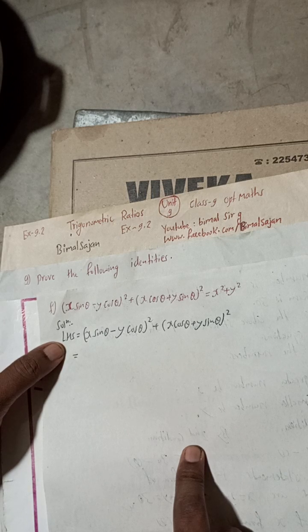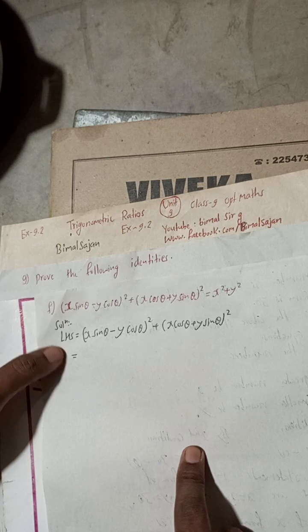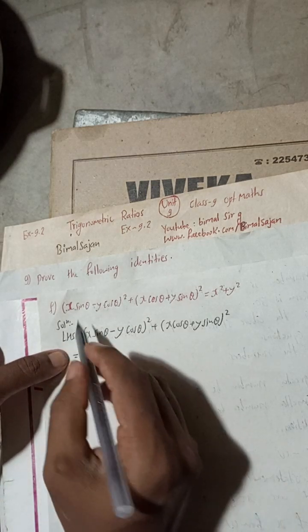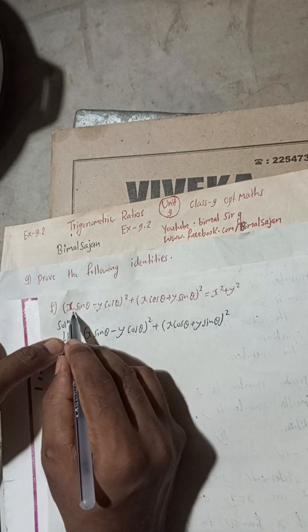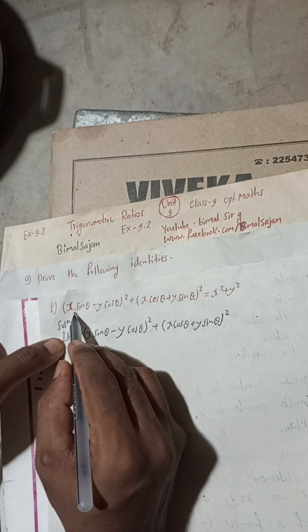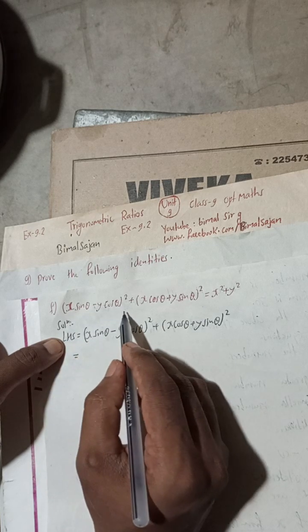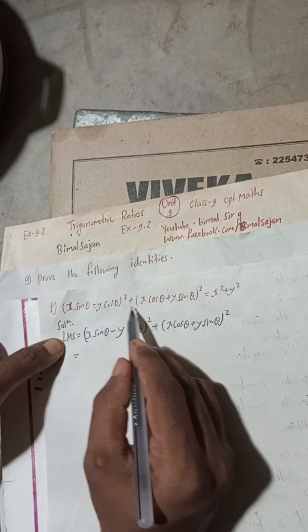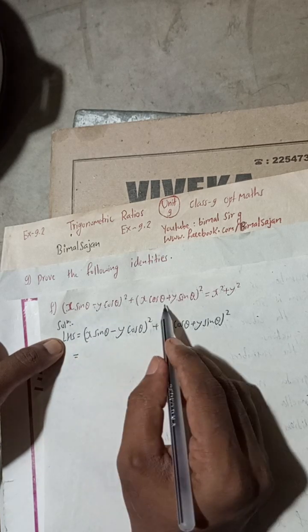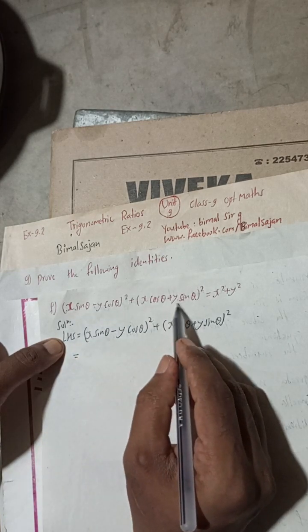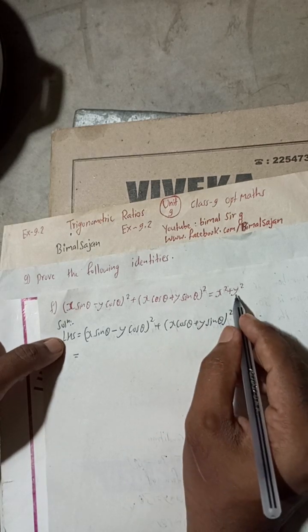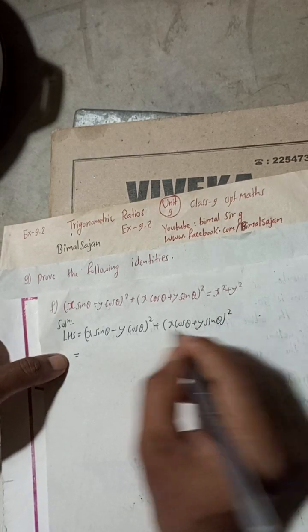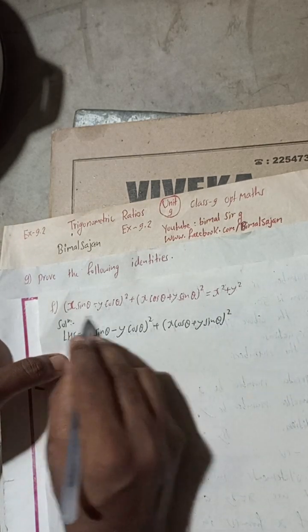The solution of this question is to prove: (x sinθ - y cosθ)² + (x cosθ + y sinθ)² is equal to x² + y². We start from the LHS.